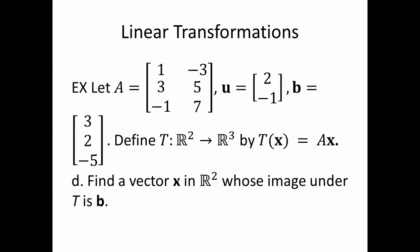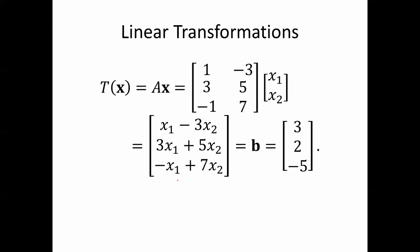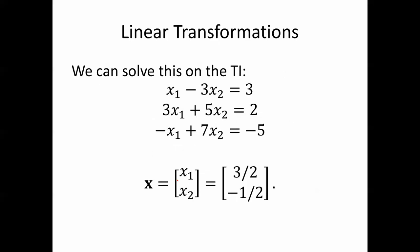Lastly, find a vector x in R^2 whose image under T is b, where b is [3, 2, -5]. We want to solve this equation: T(x), which is Ax, equals b = [3, 2, -5]. We can just solve this on the TI using RREF, reduced row echelon form. So we end up with x = [x1, x2] = [3/2, -1/2].